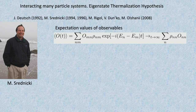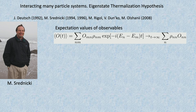This is a prediction of random matrix theory, but of course we don't deal with random systems. A major breakthrough in trying to reconcile quantum mechanics and statistical physics came due to Mark Srednicki and George Deutsch independently, who about 30 years ago generalized this random matrix theory to normal physical systems. They were driven by the same idea that time averages should approach equilibrium.